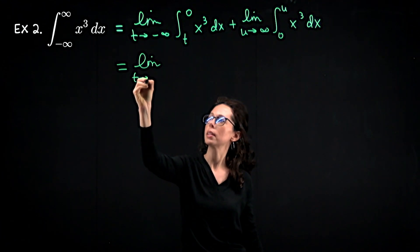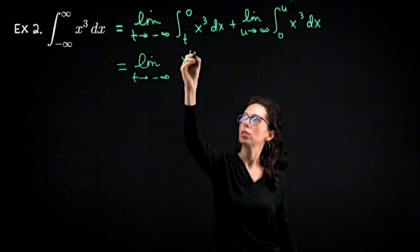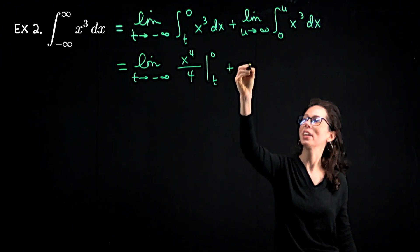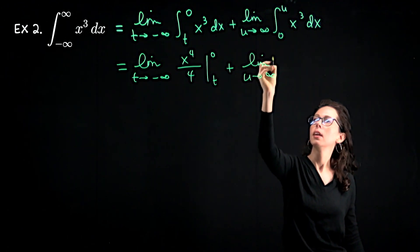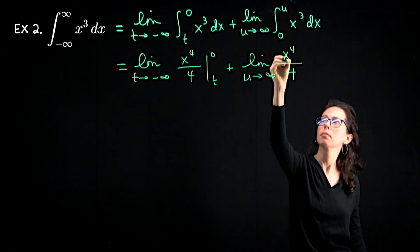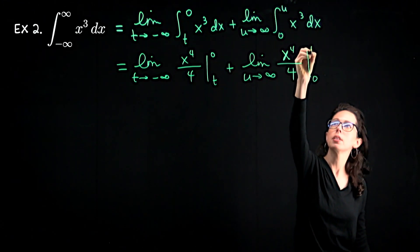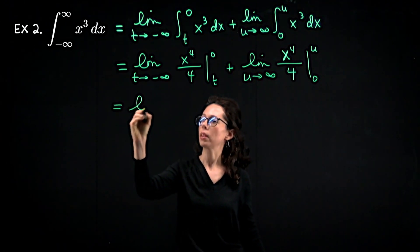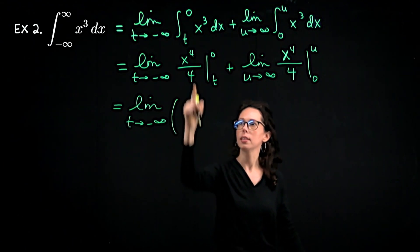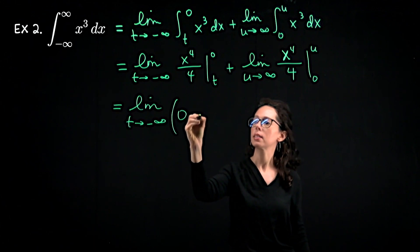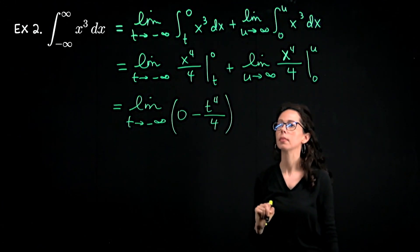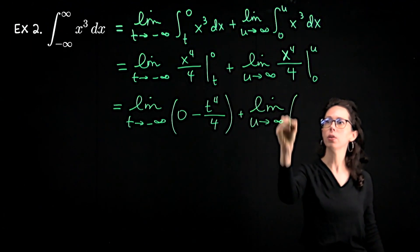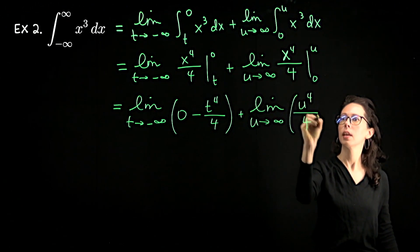Carrying on, we can antidifferentiate. This is going to be the limit as t goes to negative infinity of x to the fourth over four, with bounds at t and zero. Then the second one is the limit as u goes to infinity of x to the fourth over four, with bounds from zero to u. Plugging in our top and bottom bounds: for the first one, we get the limit as t goes to negative infinity of zero minus t to the fourth over four. For the second, it's the limit as u goes to infinity of u to the fourth over four minus zero.